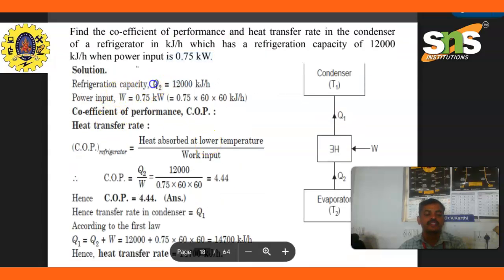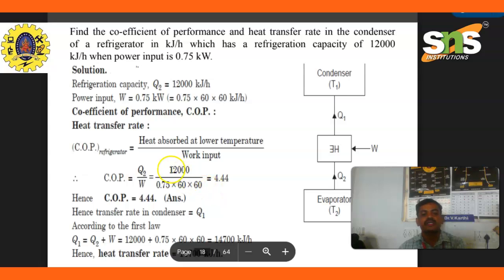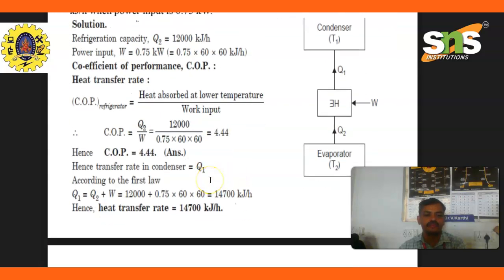Solution: Refrigeration capacity Q2 equals 12,000 kilojoules per hour, power W equals 0.75 kilowatts. Coefficient of performance: COP equals Q2 divided by W equals 12,000 divided by 0.75 times 60 times 60. Hence, COP equals 4.44.